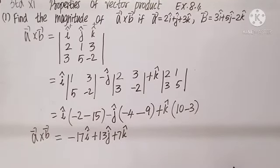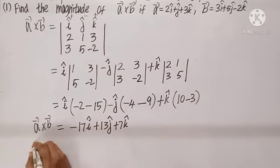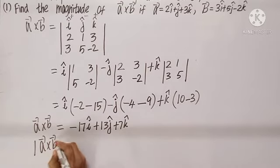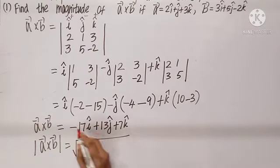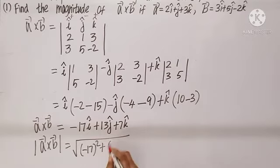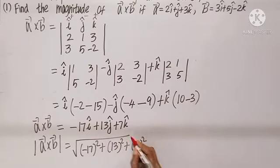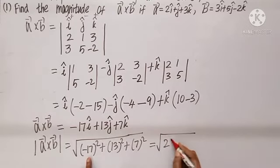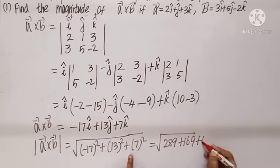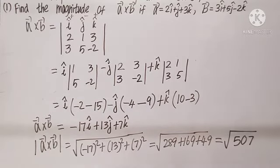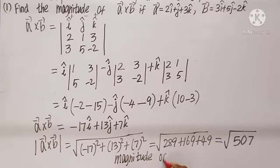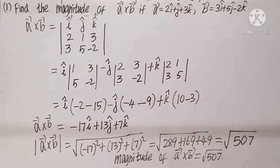The question asks for the magnitude of A cross B. That is the square root of the sum of squares: square root of (minus 17)² + 13² + 7² = square root of 289 + 169 + 49 = square root of 507. Hence, the magnitude of A cross B equals root 507, and the problem is done.